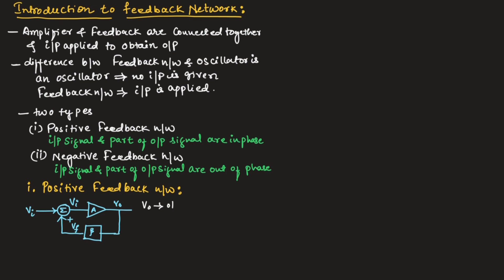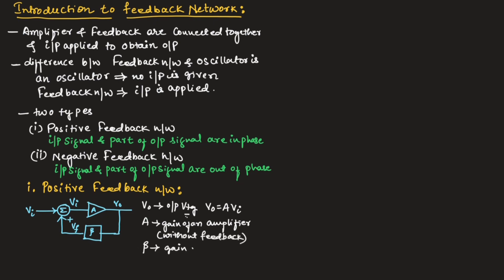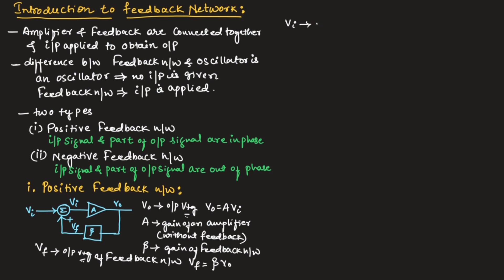The output voltage V0 is equal to A multiplied by VI, where A is the gain of the amplifier without feedback. Beta is the gain of the feedback network, and VF is equal to beta multiplied by V0. VI is known as the error signal, and VI can be given as VS plus VF.